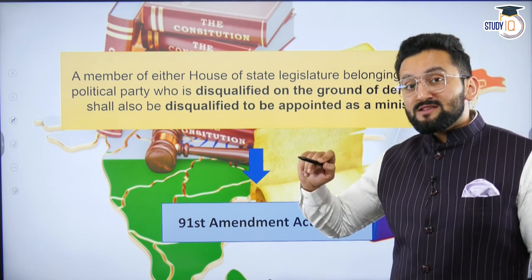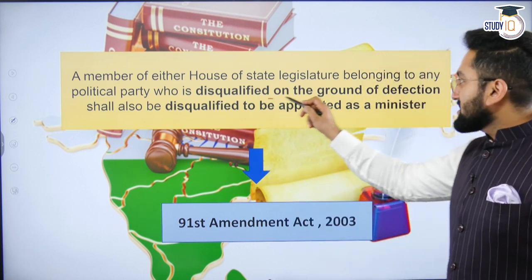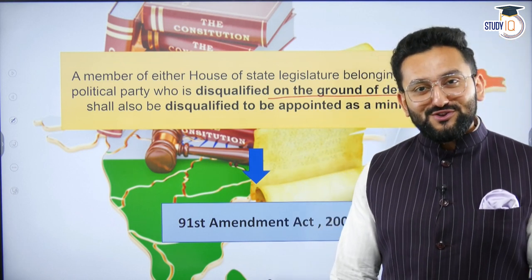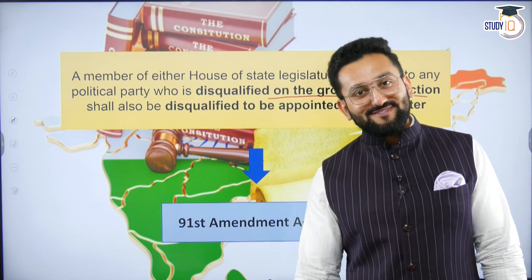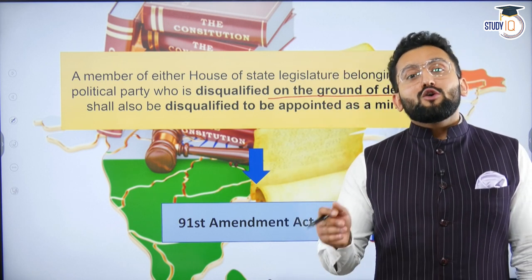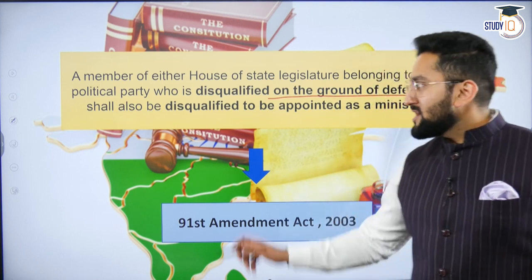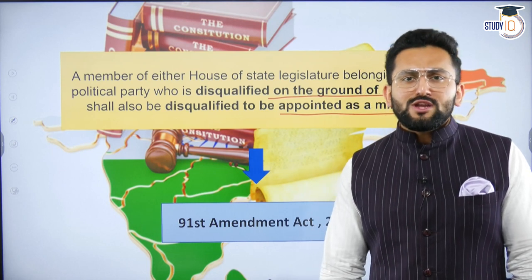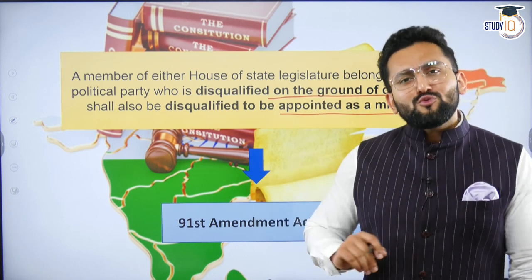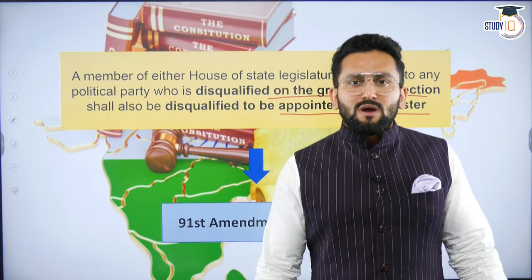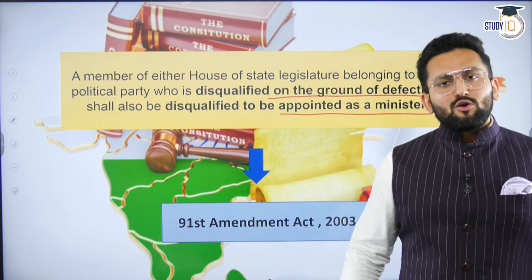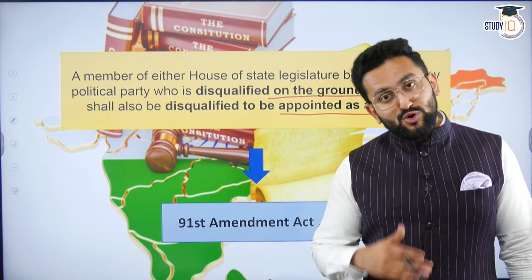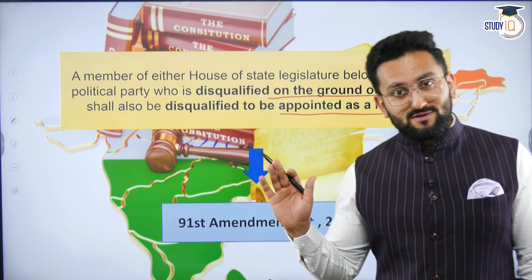Consider you are disqualified on the grounds of defection — under the 10th Schedule of the Indian Constitution, the anti-defection law. If you are disqualified on the ground of defection, you are going to be removed or disqualified from the appointment of minister as well. You cannot say that for appointment there is a rule that I can be there for six months without being a member, so allow me to be a minister although I am getting disqualified. No — the moment you get disqualified from the house, you are going to be removed from the post of minister.